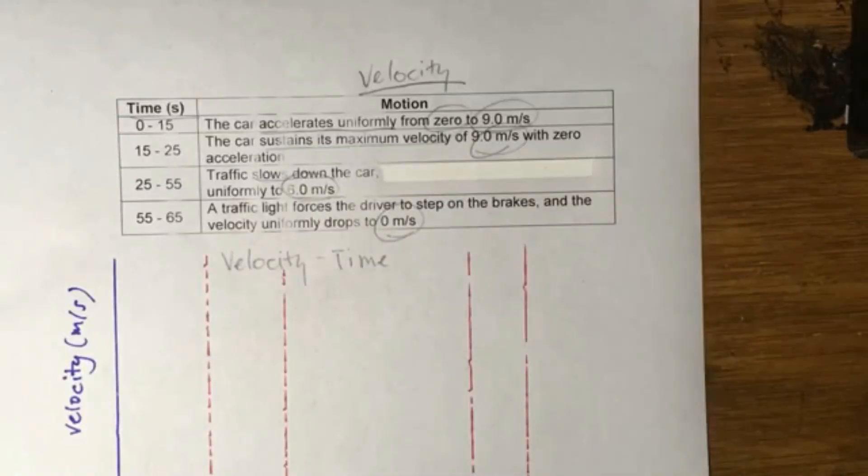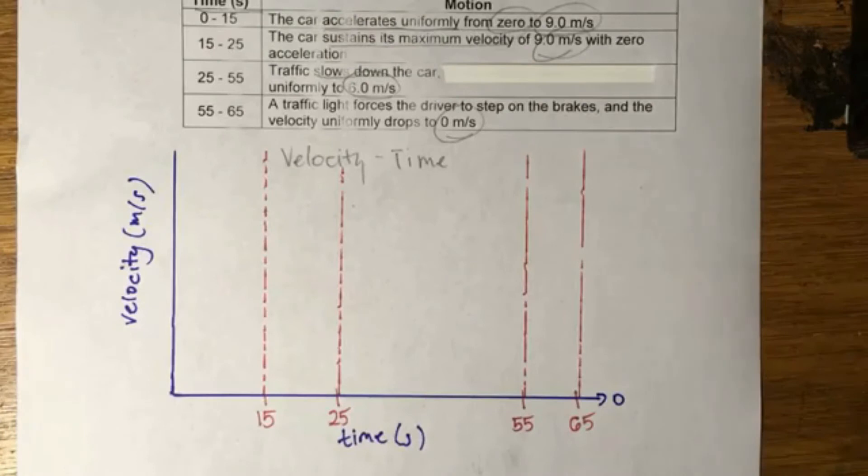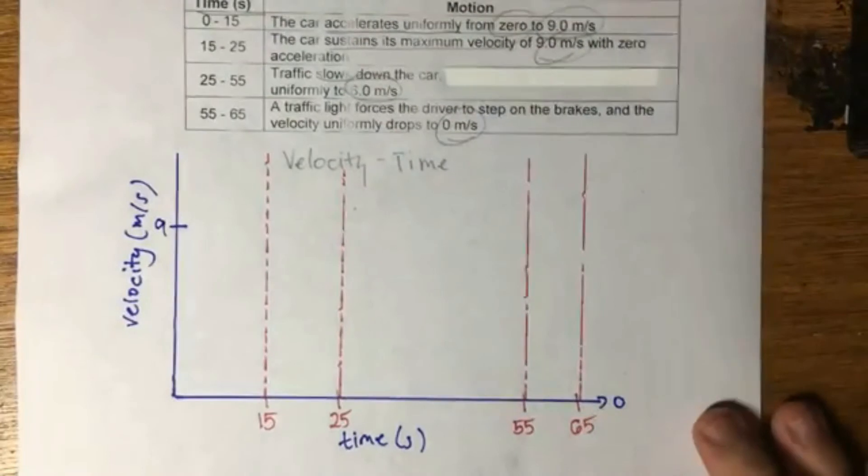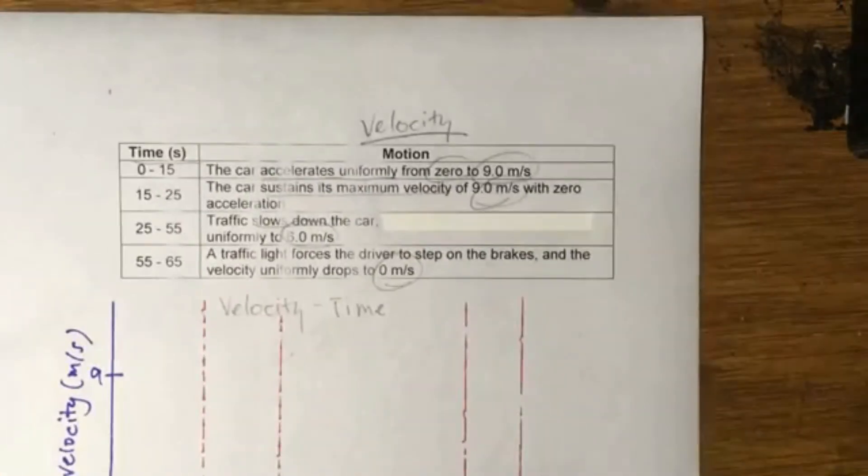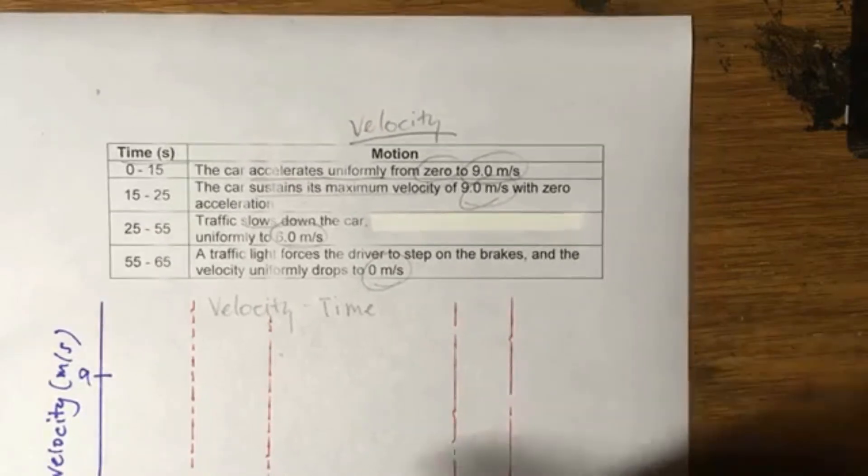So the car accelerates uniformly from zero to 9 meters per second. In this case, we are already told that we're going to go up to 9 meters per second, and we start at zero according to this. So what are we going to do?